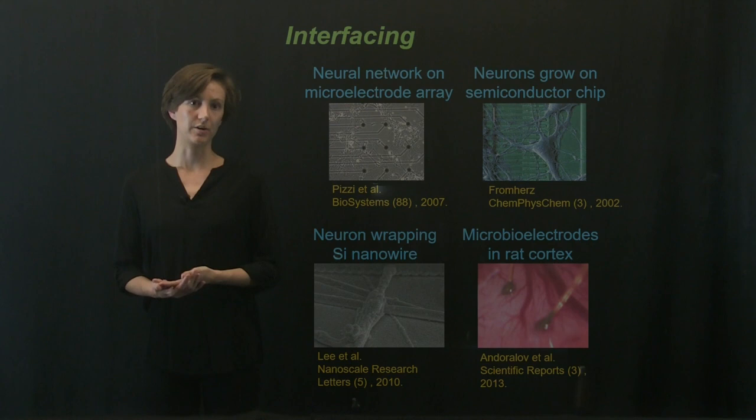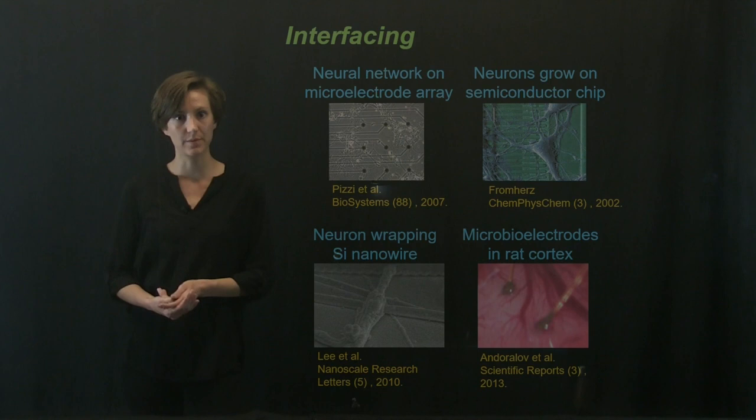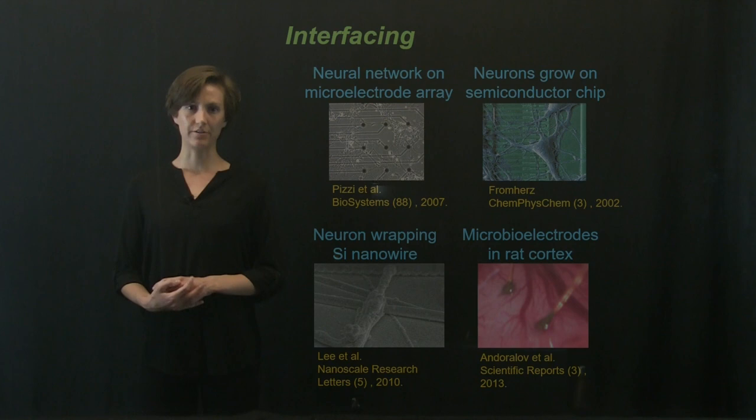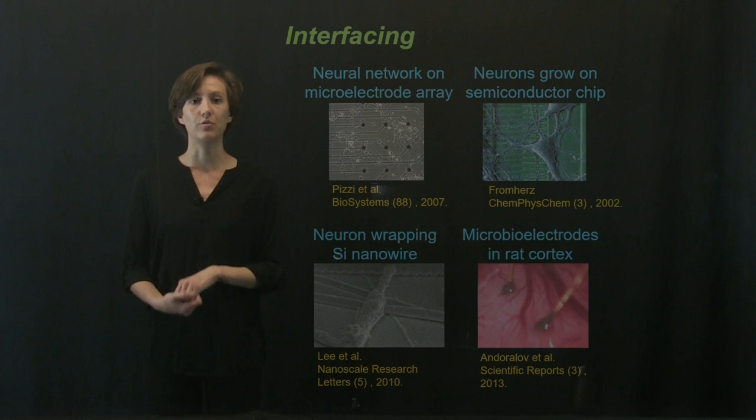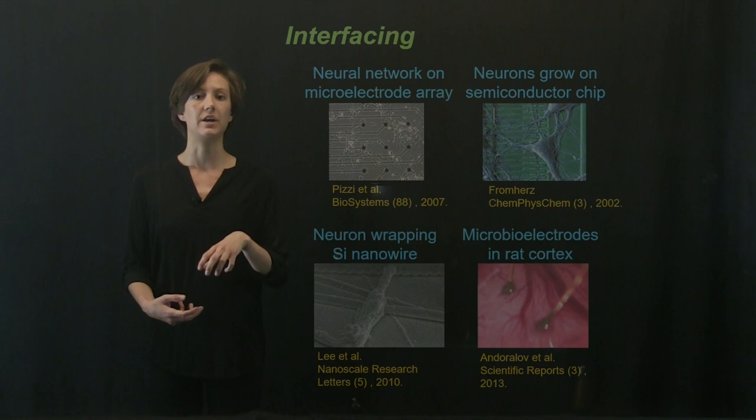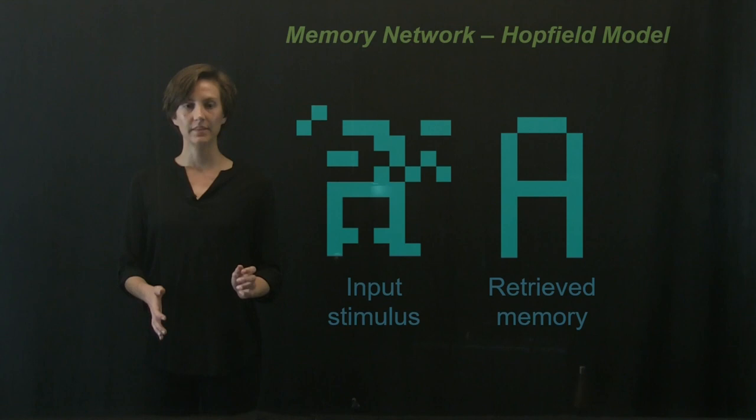On the micro scale, researchers have been able to grow neural networks on a micro electrode array, which can both stimulate and record from individual neurons. Researchers have also grown neurons on semiconductor chips and integrated them with silicon nanowires. On more the macro scale, researchers have implanted micro bioelectrodes into a rat cortex, which would record or stimulate from an entire brain region as opposed to from an individual neuron.